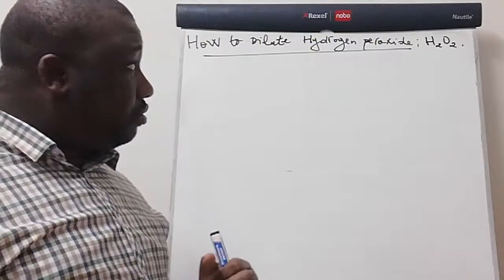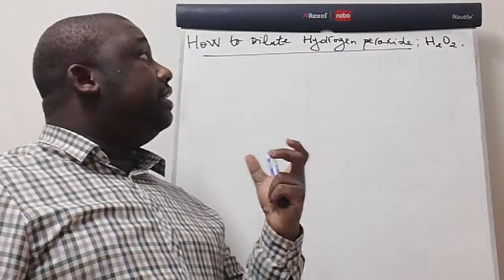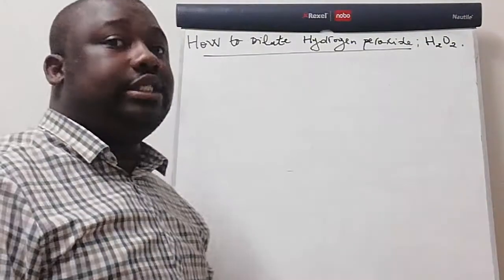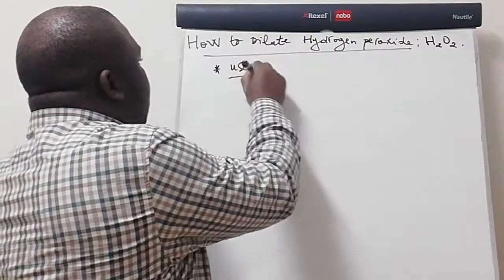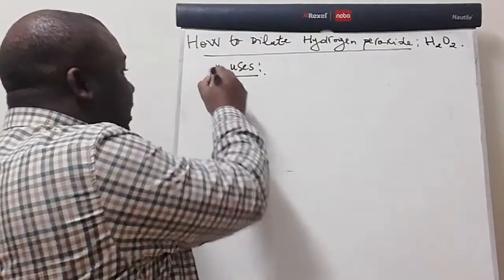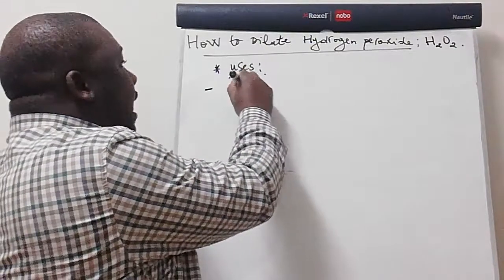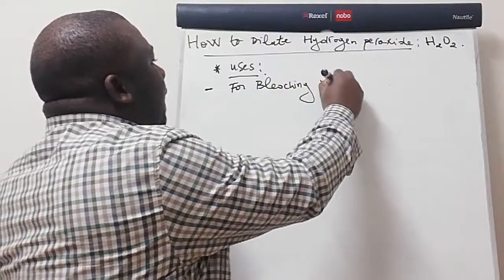From now on, before going into details, let us first state the uses of hydrogen peroxide. You need to know that it's used for bleaching hair, as a bleaching agent for hair.